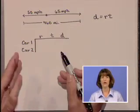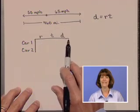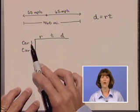Another helpful tool is to then organize our information in a table, where we put in the variables rate, time, and distance, car one, and car two.